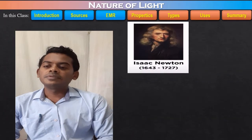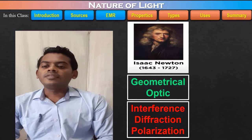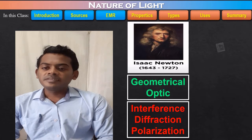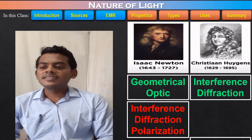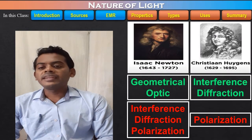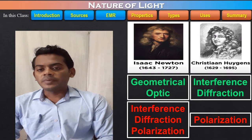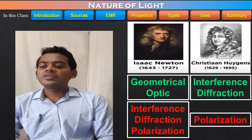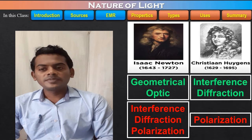The work of Newton and Huygens on the light in 17th century helped us to understand some phenomena of light. Newton's theory can explain the geometric optics, but it cannot explain the interference, diffraction and the polarization of the light.